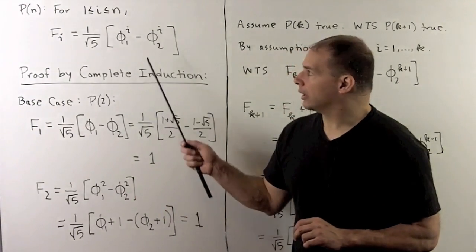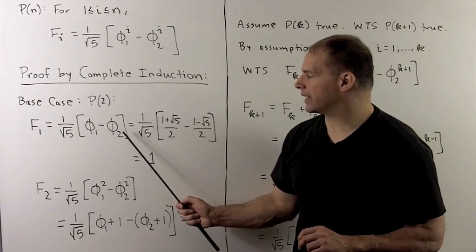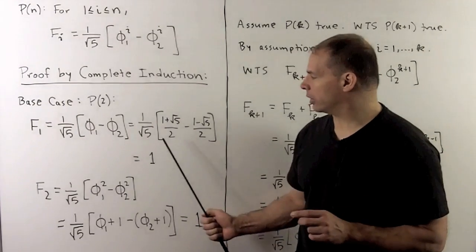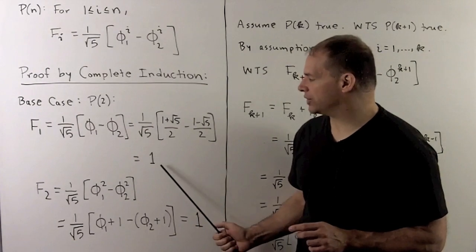For f1, we put 1 in for the exponents. I get 1 over the square root of 5, phi 1 minus phi 2. We put in for phi 1 and phi 2 from the previous board. So, that's going to give me a square root of 5 over square root of 5, which is equal to 1.